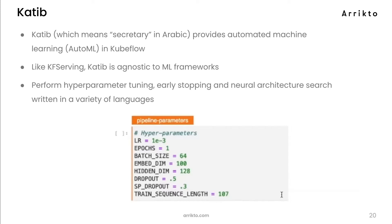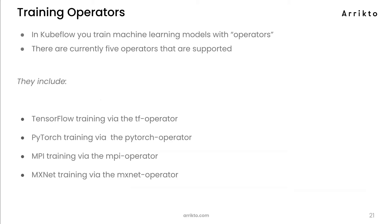The sixth and final component is training operators. In Kubeflow, you train machine learning models with operators, and there are currently around five or six operators including TensorFlow, PyTorch, MPI, and MXNet — a couple may have been merged in the last release. In subsequent lightning talks, we'll dive deep on each of these components. Hopefully this gave you a rough outline of the Kubeflow project, why it's interesting, and the basic components that come together to deliver a complete MLOps platform. Thank you.